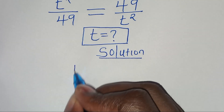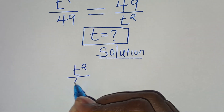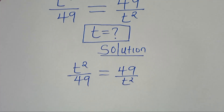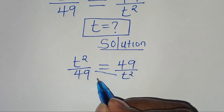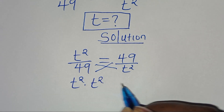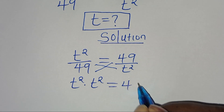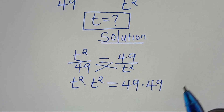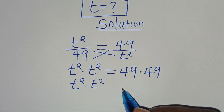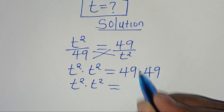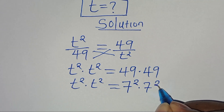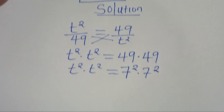We have t squared divided by 49 equal to 49 over t squared. The first step is to cross multiply, so we have t to the power of 2 times t to the power of 2, equal to 49 multiplied by 49. This is t² times t² equal to 7 squared multiplied by 7 squared.